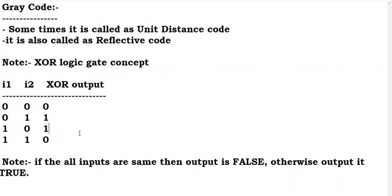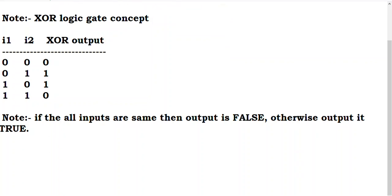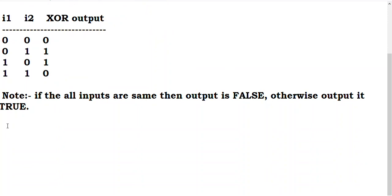Now we will have a question in grey code. If we have a decimal number, we convert to grey code or binary code. In the implementation of grey code, binary addition is also important here.